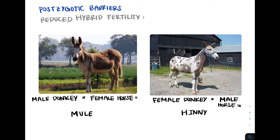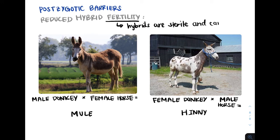Now let's look at reduced hybrid fertility, another postzygotic barrier. A mule forms when a male donkey and a female horse mate, and a hinny forms when a female donkey and a male horse mate. Both of these hybrid offspring have reduced fertility — that is, the ability to produce offspring when mating with either parent species. In this case, the hybrids are sterile and cannot produce fertile and viable offspring. Mules and hinnies are robust but sterile.